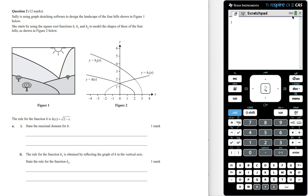Sally is using graph sketching software to design the landscape of the four hills shown in figure 1. She starts by using the square root functions h, h1, and h2 to model the shapes of three of the four hills, as shown in figure 2.